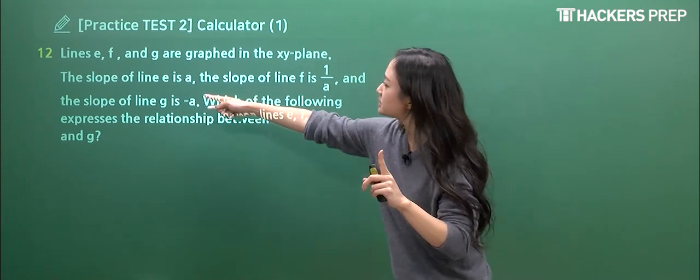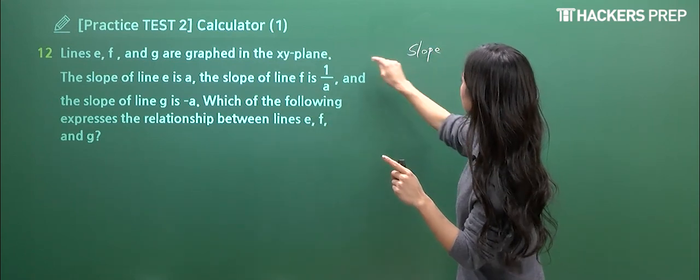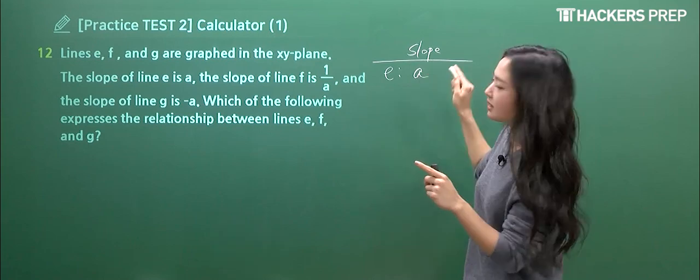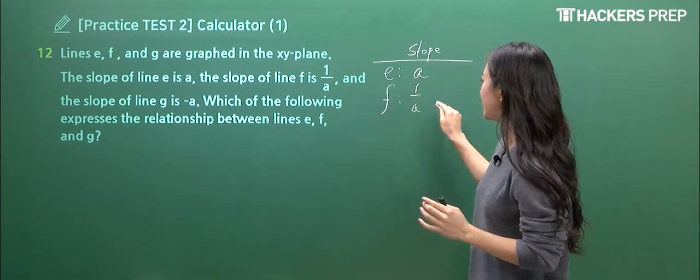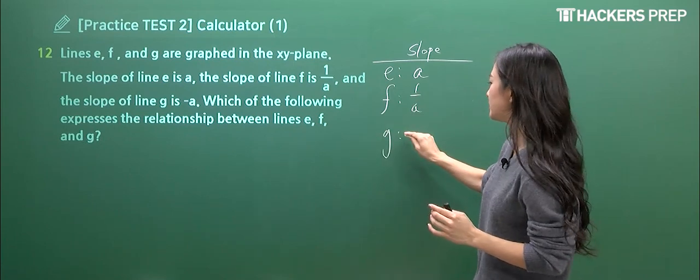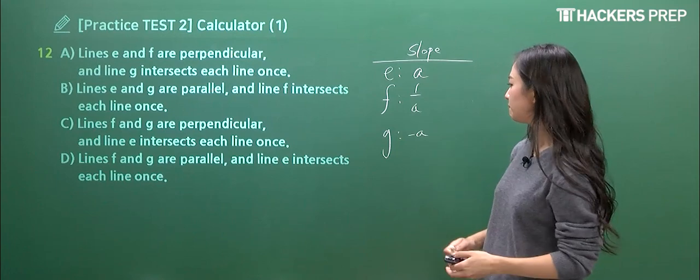First of all, they're telling us the slope of line E is 8, some variable. And the slope for line F is 1 over A. And finally, the slope of line G is negative 8. So which of the following correctly describes the relationship among the three lines?